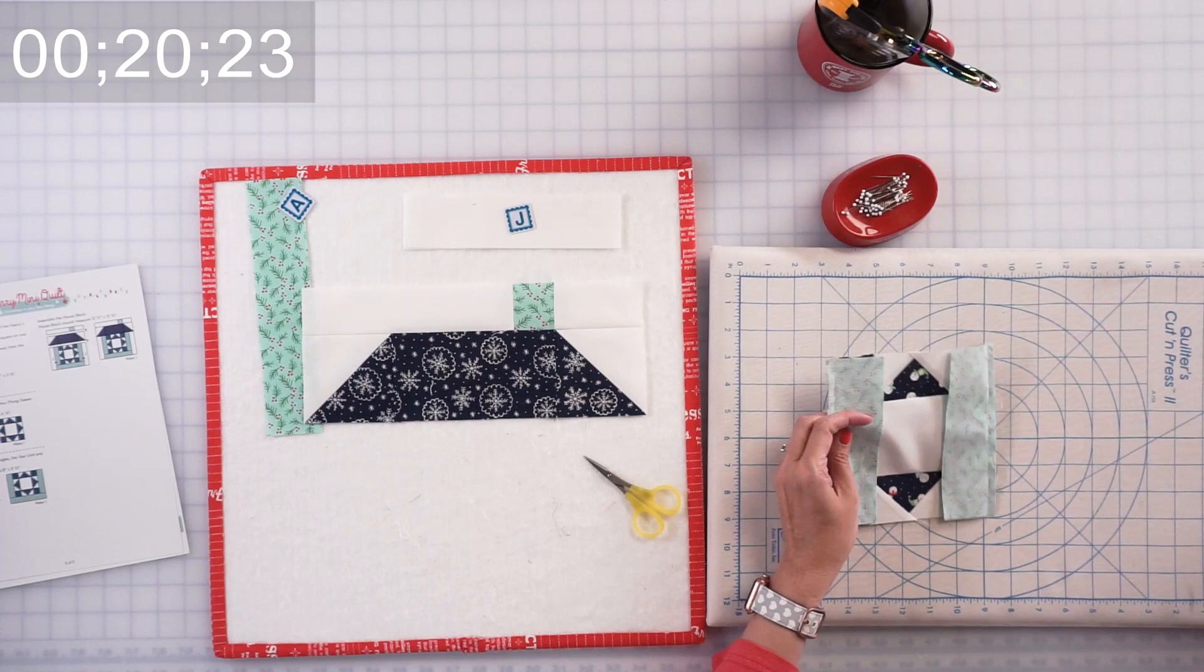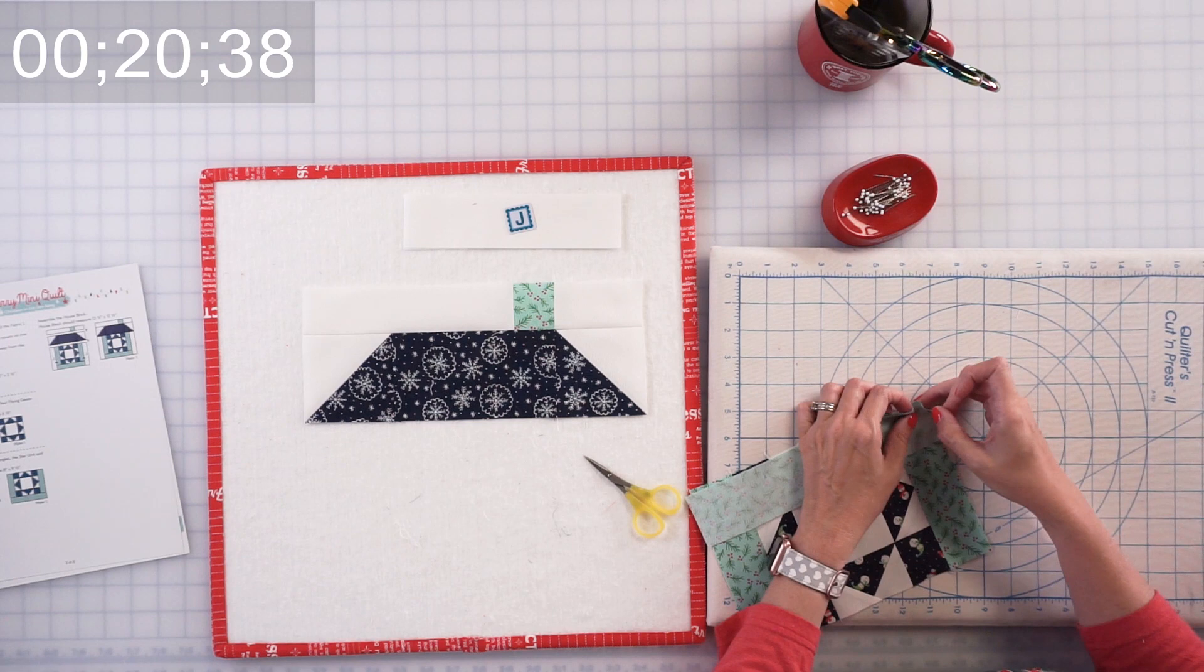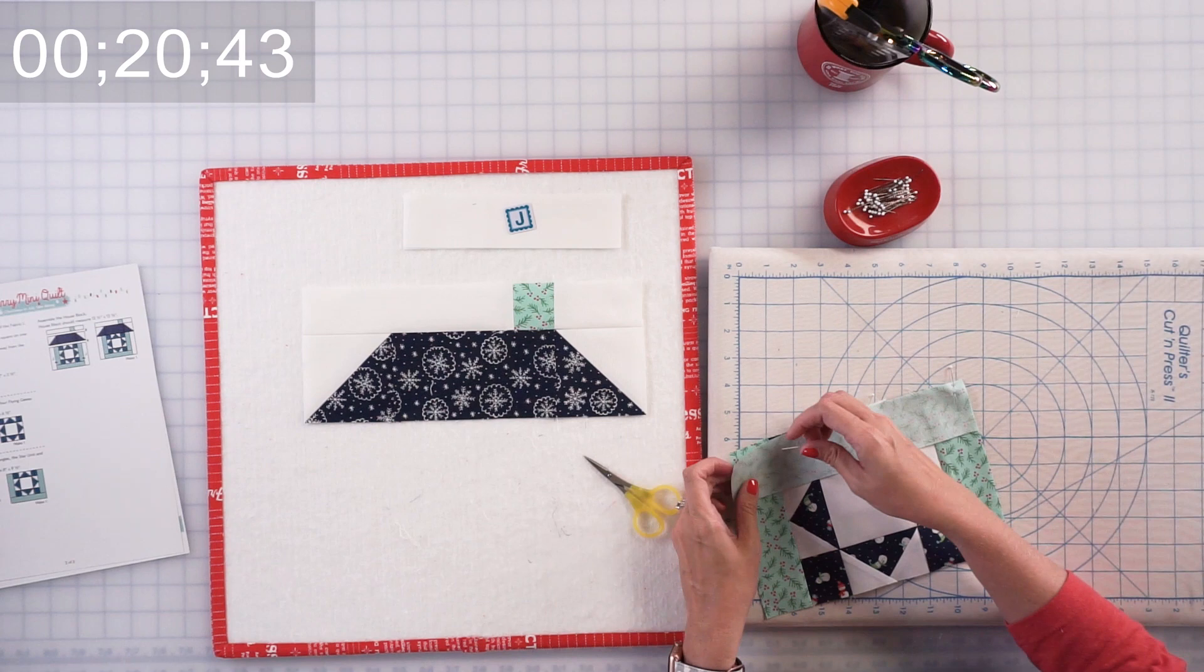I'm going to add the A to the bottom, stitch, press, and then can't really save time in this step just because you can't really chain piece. But if you were doing several blocks at one time, you could do all of the steps at the same time.